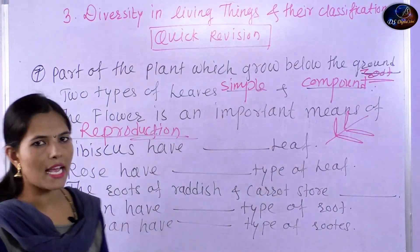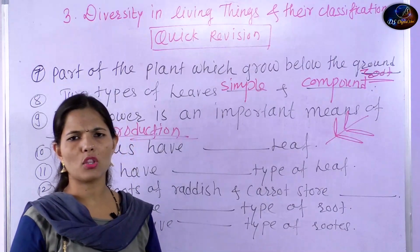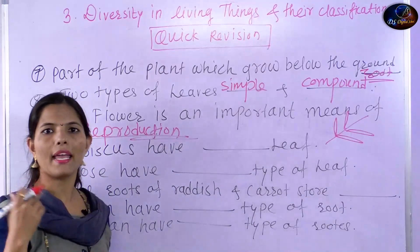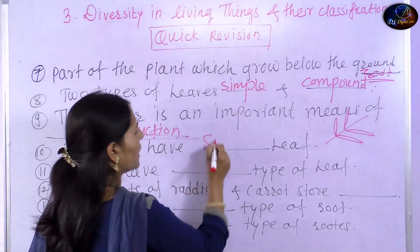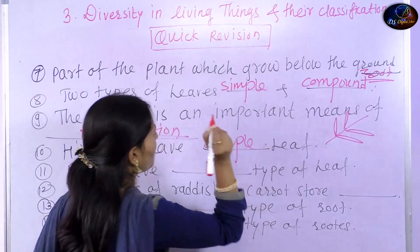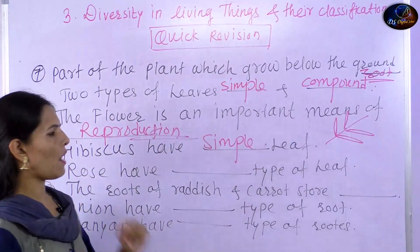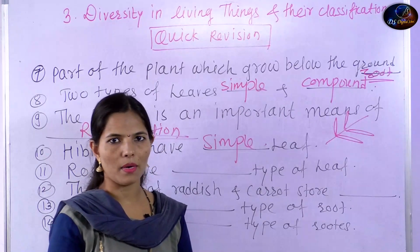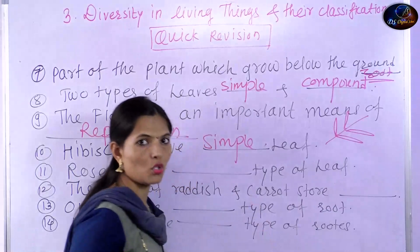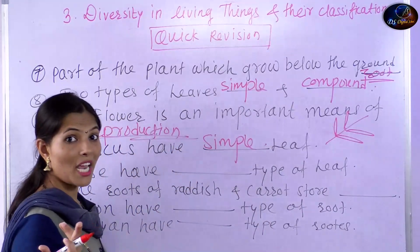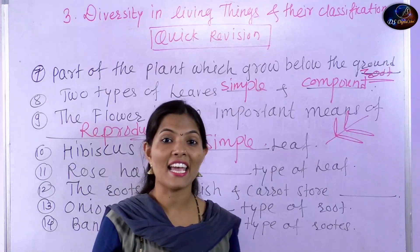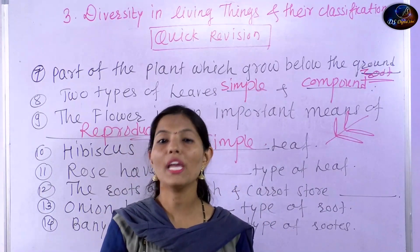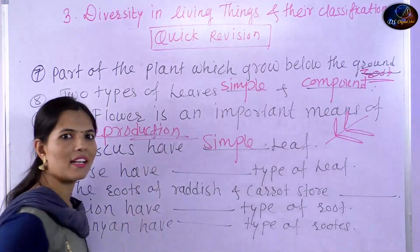Hibiscus has a simple type of leaf — it is obviously a simple leaf. Why is it simple? Because the leaf blade is one single piece. Rose — which type of leaf does rose have? Let's put it in the comment box. Rose also has compound leaves — many leaflets together. So comment your answer below.